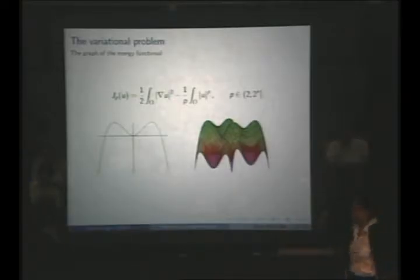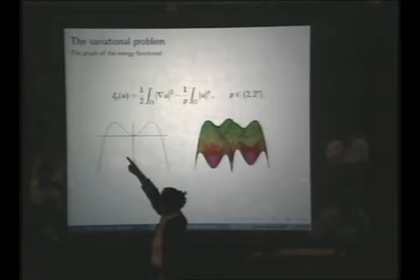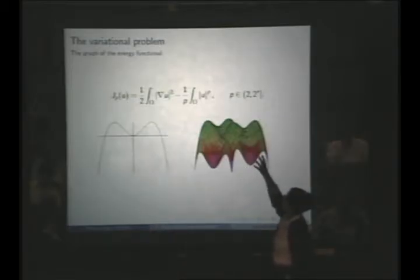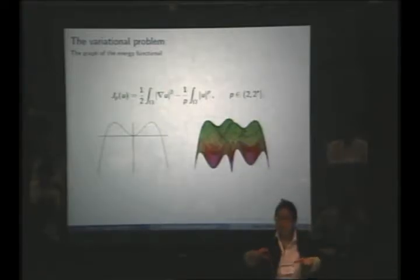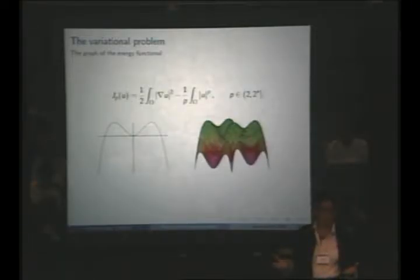So the graph in each direction — although it is defined in an infinite dimensional Hilbert space — if we look at any one-dimensional subspace, the graph looks like this. Everything together looks like a valley surrounded by mountains. If we are looking for solutions, we have to look for critical points. The simplest idea is: I am standing in the center of the valley and I want to find a mountain pass.